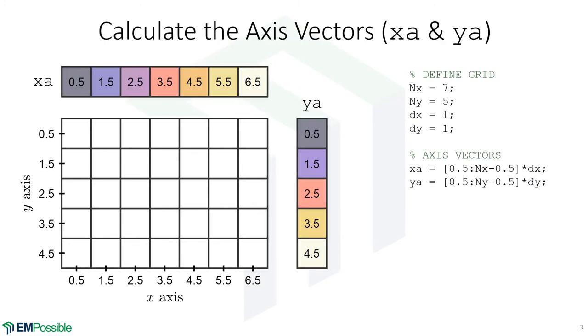The next thing we'll want to do is create what I call axis vectors. That's my word, I don't know if that's an industry standard thing, but they're just arrays that contain the center position of each cell in the grid.